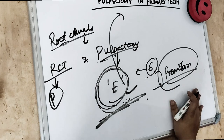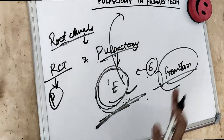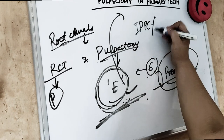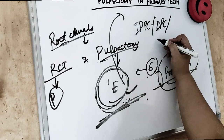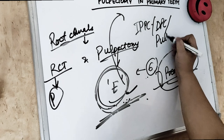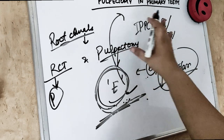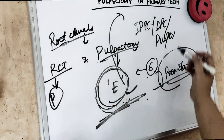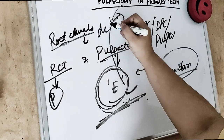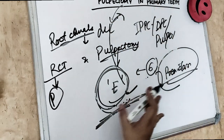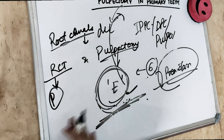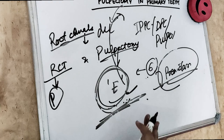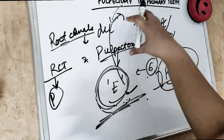All the procedures done so far — IDPC (indirect pulp capping), direct pulp capping, and pulpotomy — involved a vital pulp; we were saving the living pulp. The pulpectomy procedure is different because we are removing all of the pulp. The pulp is removed, the canal is enlarged and disinfected, and basically no pulp is left in the tooth. That is why it is classified as non-vital pulp therapy.